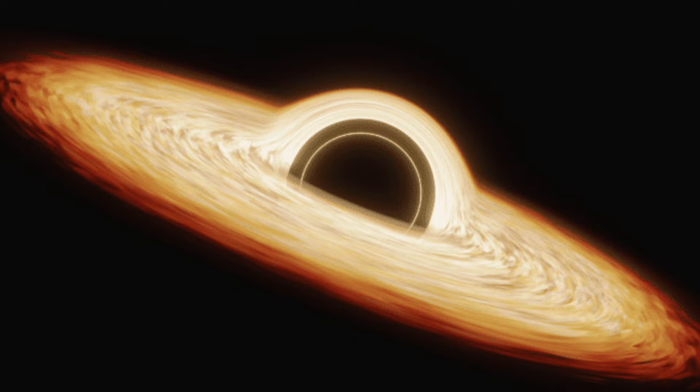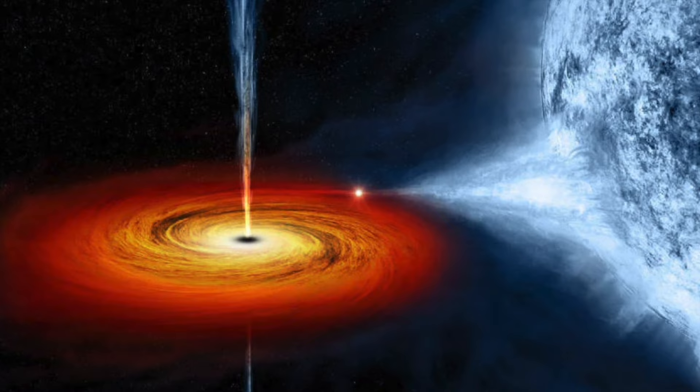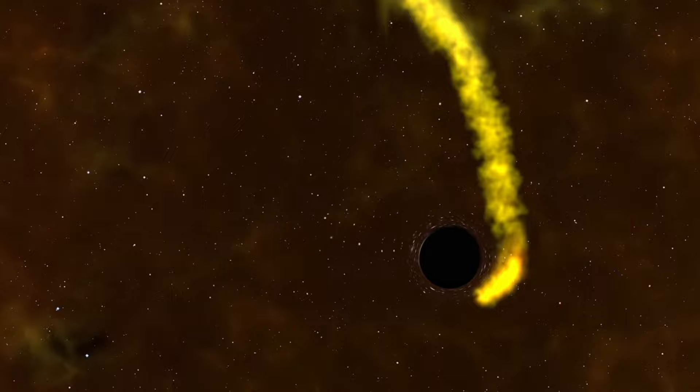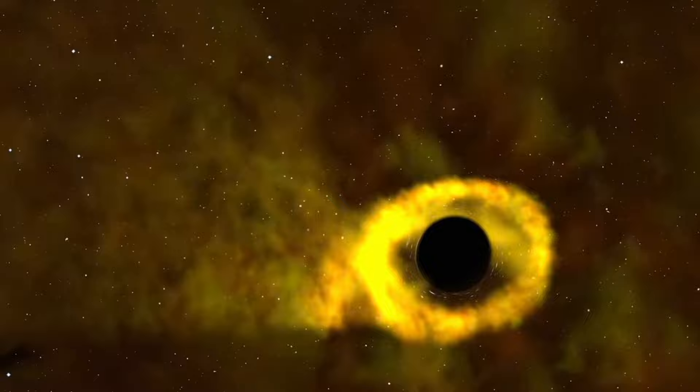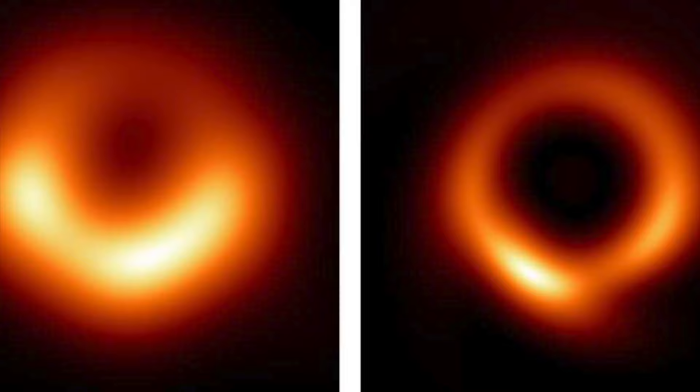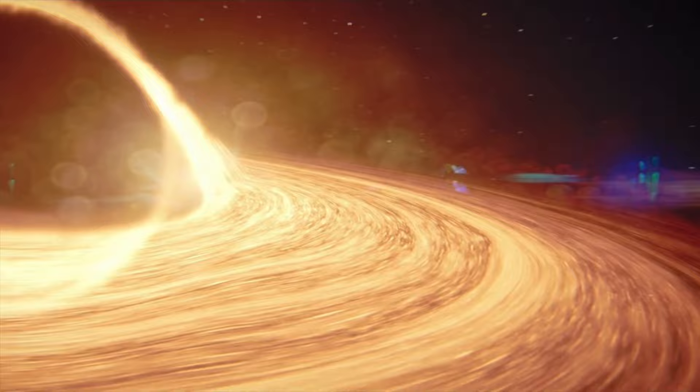On May 12, 2022, the Event Horizon Telescope collaboration unveiled the first-ever image of Sagittarius A-star. This image, derived from data collected by radio interferometers in 2017, definitively confirms the existence of a black hole within the object. This marks the second image of a black hole ever obtained, following the one depicting Messier 87 supermassive black hole in 2019.